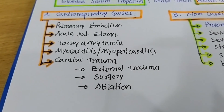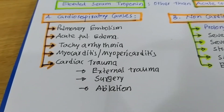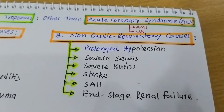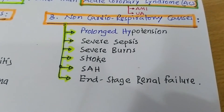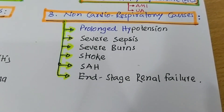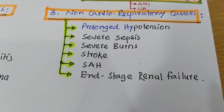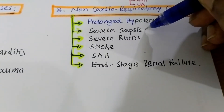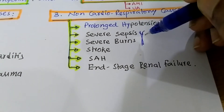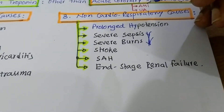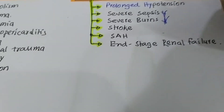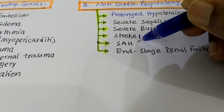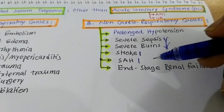Now, the non-cardiorespiratory causes: prolonged hypotension is an uncommon cause but may lead to elevated serum troponin. Severe sepsis and severe burns are causes we invariably encounter. Severe burn patients may present with elevated serum troponin level. Sometimes a stroke — mainly hemorrhagic stroke — may also present with increased serum troponin level.